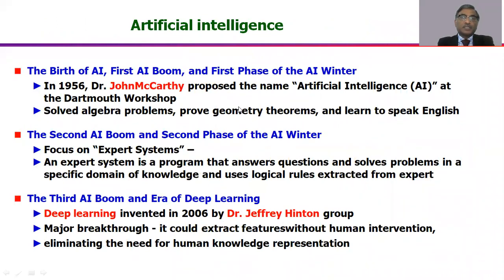The term artificial intelligence was first coined by John McCarthy in 1956. At that time it referred to solving simple algebra problems, but even that was a miracle in that era. The second AI boom came when expert systems emerged. An expert system is basically any algorithm which tries to answer a specific question based on a specific domain of knowledge.